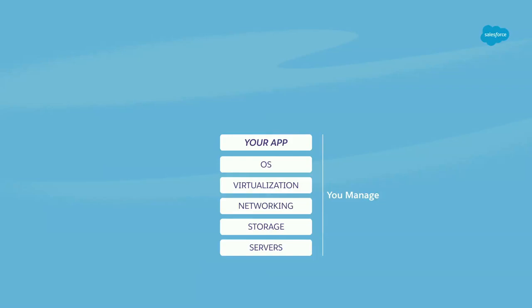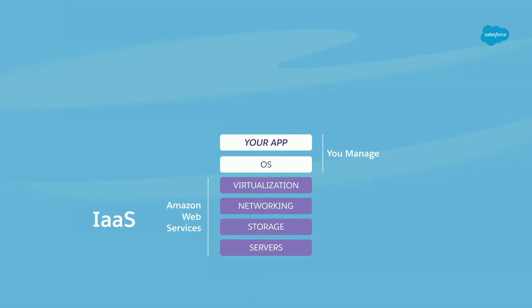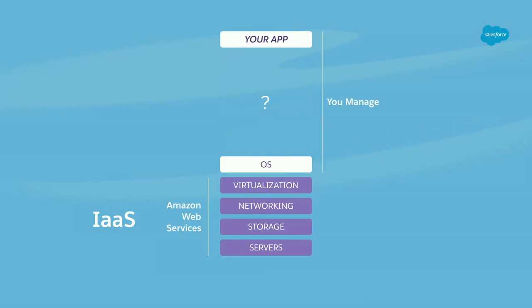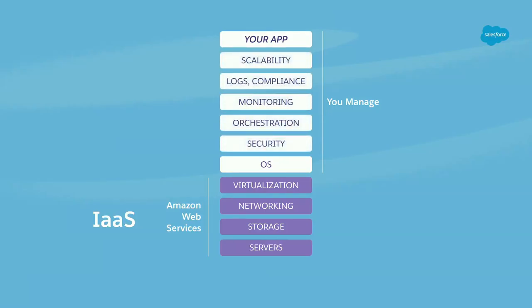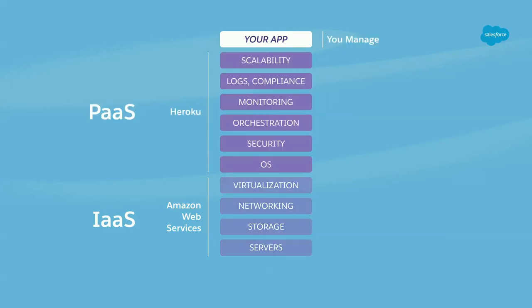We realized pretty quickly as an industry this was not an ideal way to go forward. So we have companies like Amazon Web Services and Google Cloud Platform — they provide infrastructure as a service, taking a lot of the pieces of getting a web application online off your plate. Now you're only dealing with your application and your operating system. But that's an oversimplification — there are pieces that add complexity, like scalability, logs and compliance, monitoring, orchestration, and security. Those are the pieces Heroku is willing to manage for you as a platform as a service, so you can focus on your application, build features for your users, do what you love, and we'll take care of the rest.